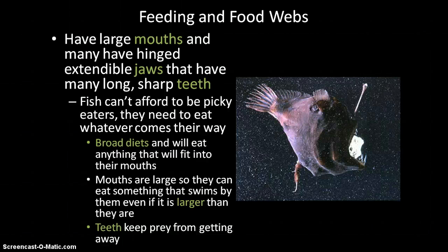Other adaptations include huge mouths with hinged, extendable jaws and long, sharp teeth. They need to be able to eat whatever comes by because there's not a lot of food. These big mouths accommodate whatever comes by, and jaws that can open very wide help them not let prey escape. They also have really broad diets down here because they can't be picky — if a squid swims by and they don't eat it, the next meal may be two months away. So they have to be able to eat whatever, whenever, and not be picky.